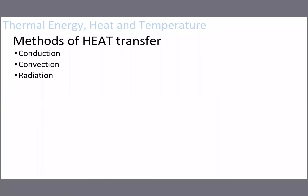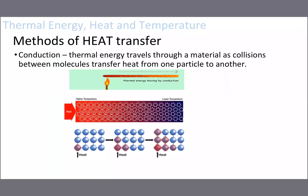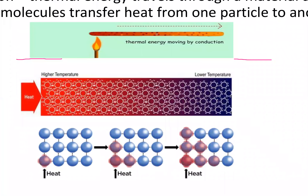Now let's go through methods of heat transfer. The first is conduction. Conduction is when thermal energy travels through a material as particles collide into one another. The particles must be in contact with each other. If you heat up a metal rod and stick it in fire, heat travels down the stick — eventually it gets hot in your hand. At the molecular level, all particles start vibrating and bump into their neighbors, and that energy is transferred or conducted all the way through the material.